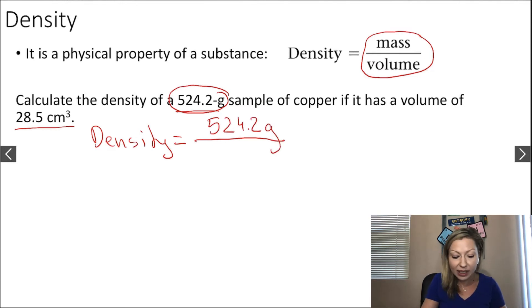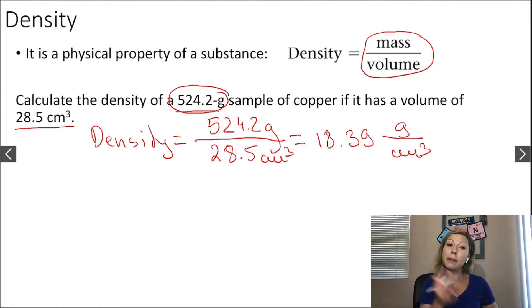I divide it by the volume. Do I have the volume given? Yes, it's 28.5 cubic centimeters. If you do this calculation, you get 18.39. What are the units? The units are grams per cubic centimeter, from the unit of the mass and the unit of the volume. Density has a derived unit.